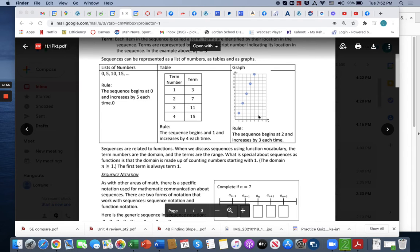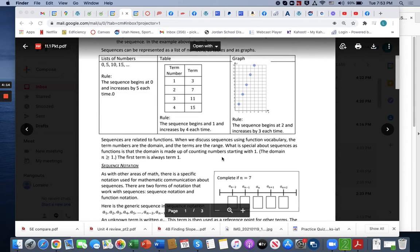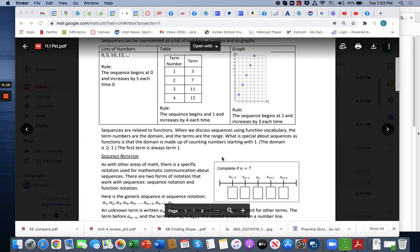Over here we see the domain would be 1, 2, 3, 4, and 5, and the correlated range would be 2, 5, 8, 11, and 14.